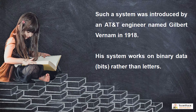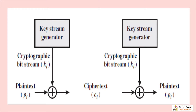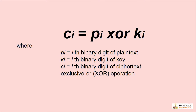His system works on binary data — bits rather than letters. In the diagram, plain text is sent to an XOR operation along with a key stream from a key stream generator, producing cipher text. The formula is: CI = PI XOR KI, where P is the binary digit of plain text, K is the binary digit of the key, and C is the cipher text.